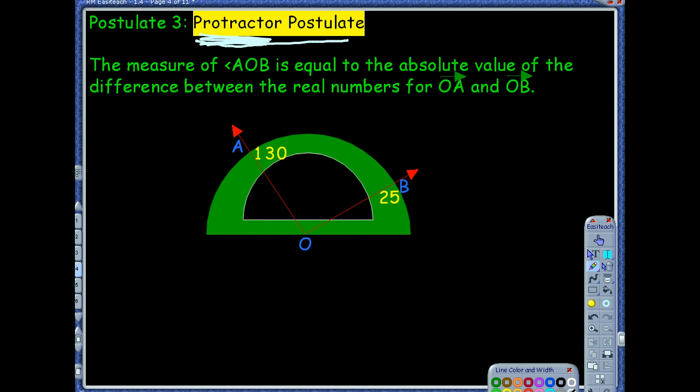This postulate basically says if you want to find a measure of an angle, in this case angle AOB, it is equal to the absolute value of the difference between the real numbers for those rays. So notice ray OB and ray OA, where they intersect the protractor, you subtract those coordinates. So 130 minus 25. Absolute value if you need to, basically because you want a positive amount. And then that gives you the measure of that angle.